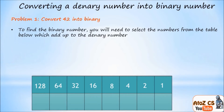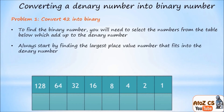To find the binary number, you need to select the numbers from the table which will add up to the denary number. The tip is to always start by finding the largest place value number that fits into the denary number. Looking at the table, the largest place value that fits into 42 is 32, so I'm going to use 32 and put a one there.